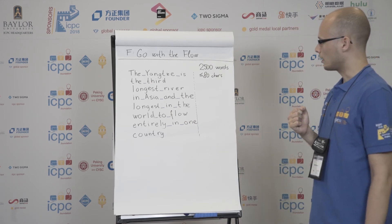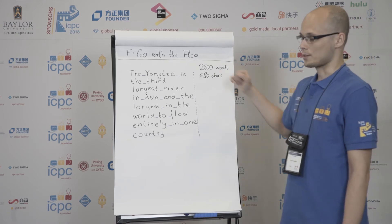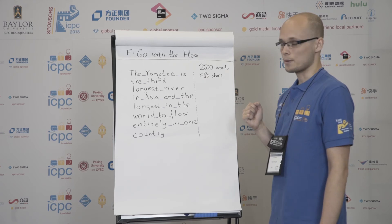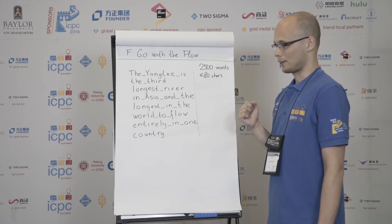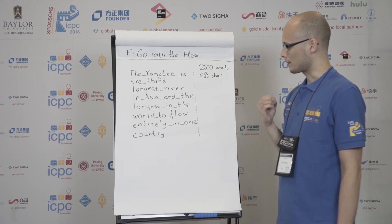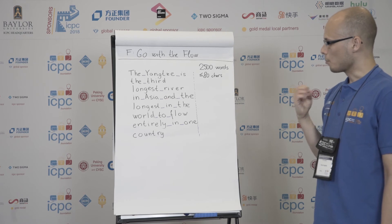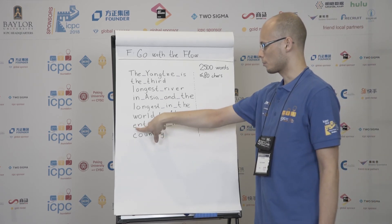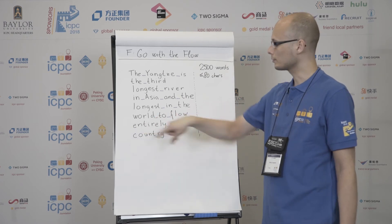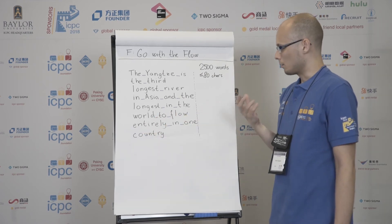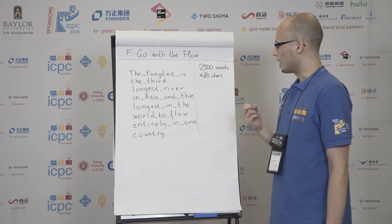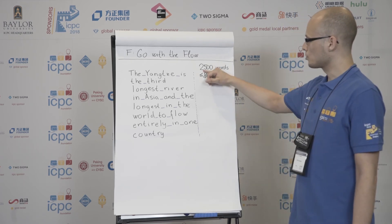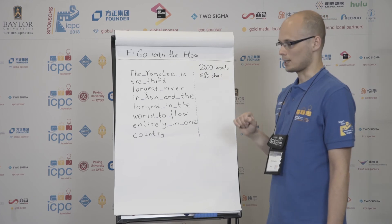How do we do that? Since the limits are rather small and the time limit is very generous, we can afford to try every possible length of the line. The smallest width of the line is the length of the longest word, which here is 'entirely'. And the longest meaningful length of a line is the sum of lengths of all words, so it is at most 2,500 times 80.